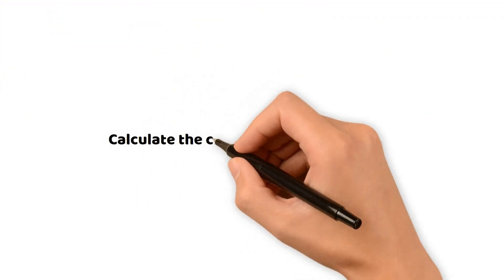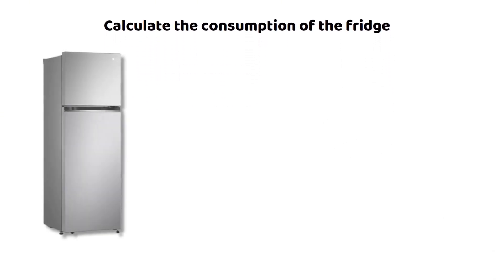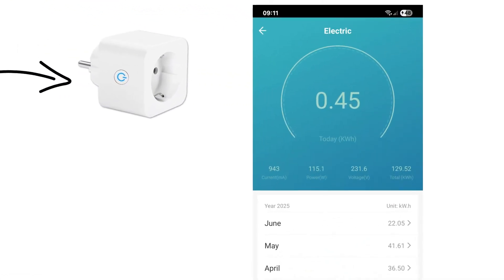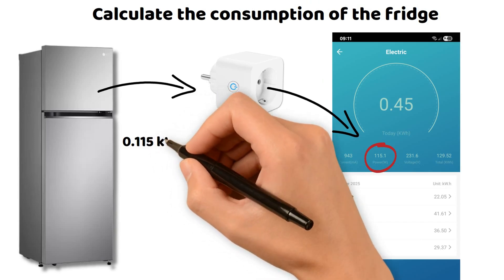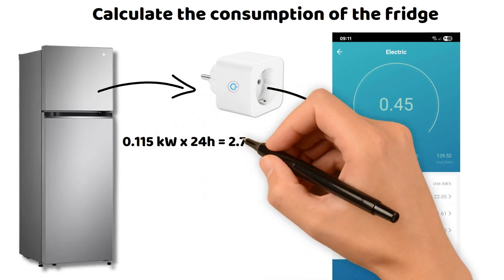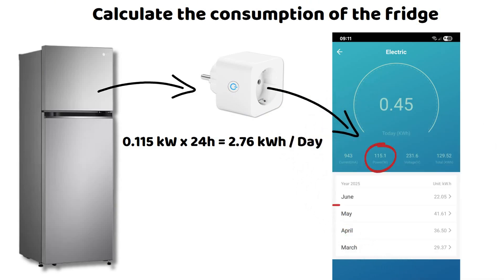We start with the consumption of my fridge, which is a large family fridge. Even though there are much bigger ones, this already gives us a solid reference point. Its consumption is about 115 watts. If the compressor were running continuously at full power, that would give 0.115 kilowatts times 24 hours, which equals 2.76 kilowatt hours per day. But in practice, the data I recorded in May on my app over 31 days is about 41 kilowatt hours, giving us a daily average of 1.32 kilowatt hours per day.